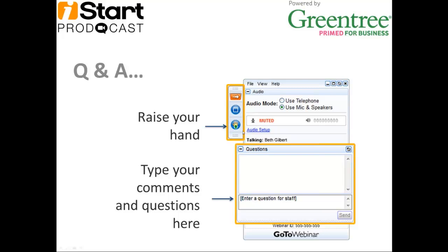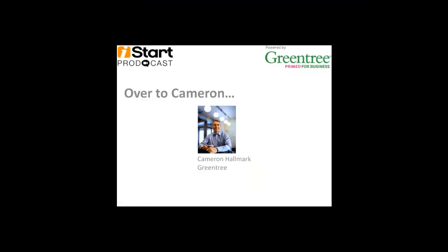From Mitchell, a question about timesheets. Greentree does have a timecarding system. When you enter timesheets via the e-timesheets module, they can go to project costing, directly to payroll, or both and be split. If going to payroll, it has a timecard interpreter — for example, if someone works 10 hours on a job on Monday, the interpreter converts that to eight hours at standard time and two hours at time and a half for payroll purposes.